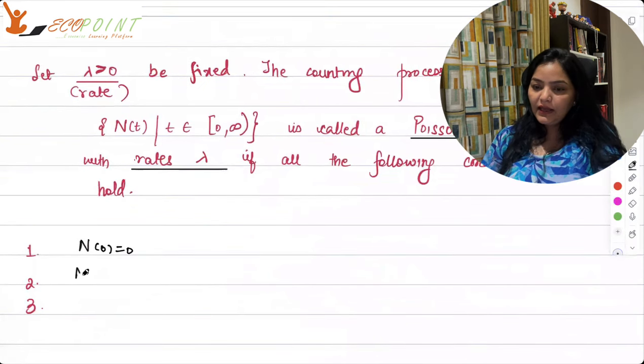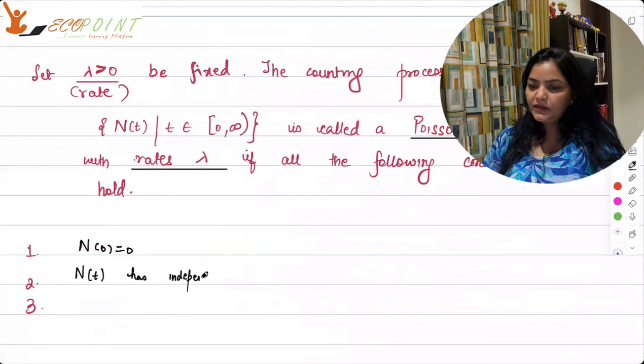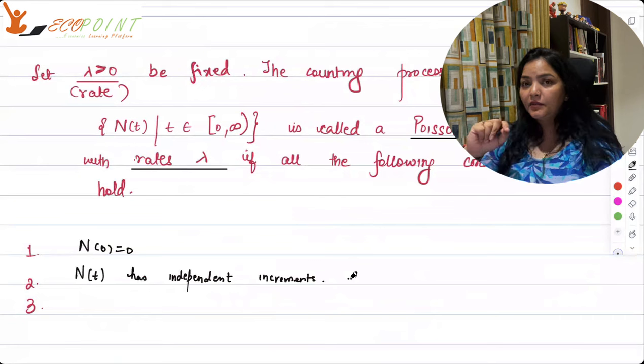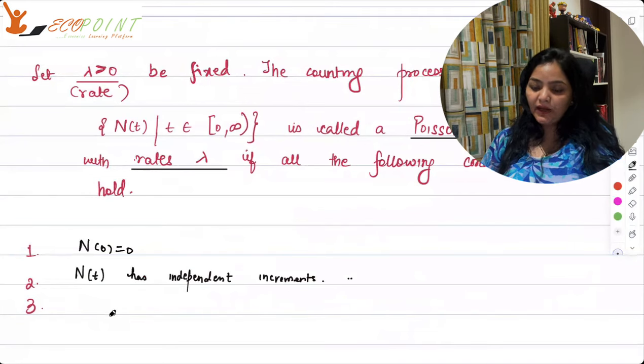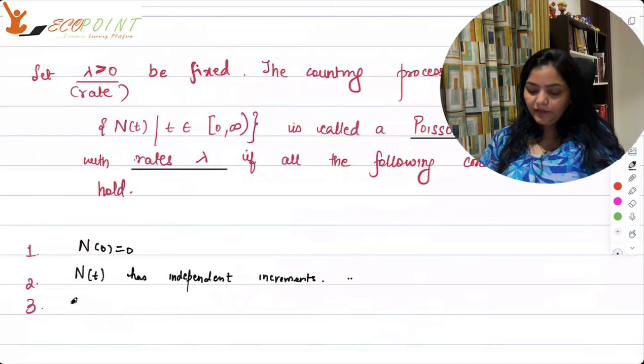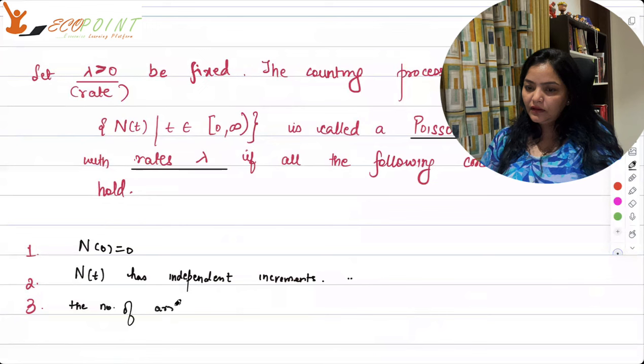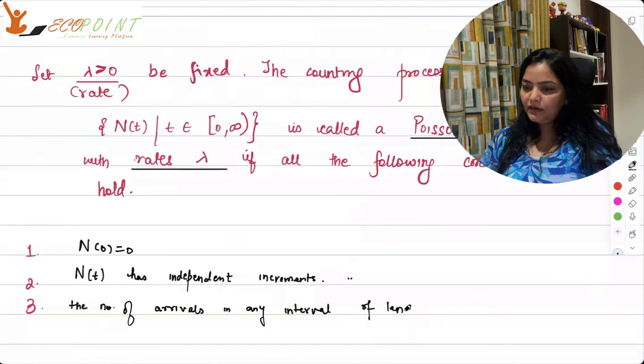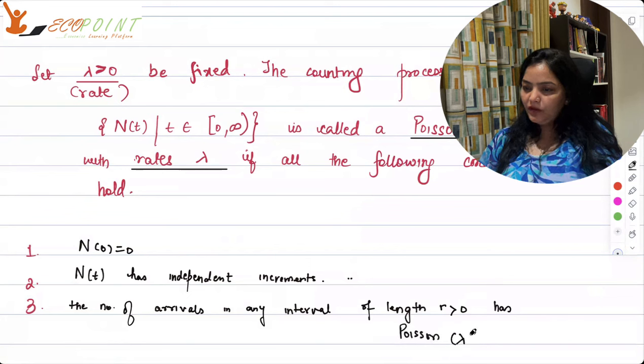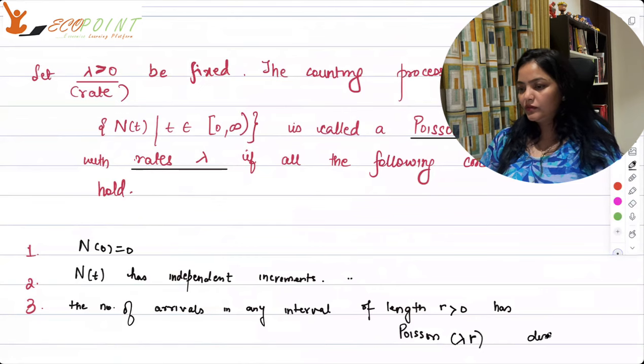There are three conditions that should hold. Which we have already talked about. First, n0 has to be 0. That's pretty obvious. Then nt has independent increments. Now why are these independent increments? Because your n trials are independent. Your trials are independent. If you are taking a case of coin, tosses are independent. That is why nt has independent increments. And thirdly, the number of arrivals in any interval of length rho greater than 0 has poison lambda rho distribution.